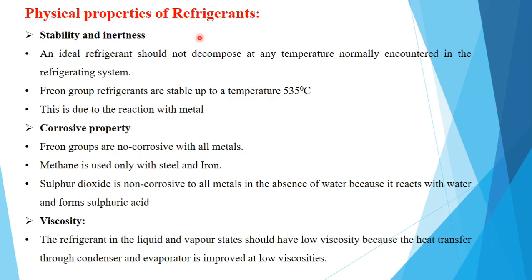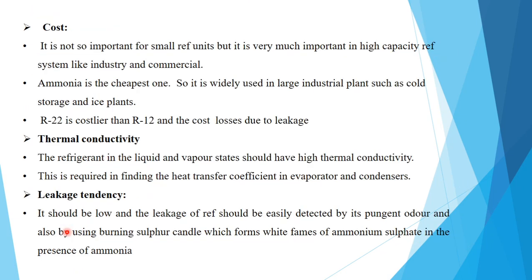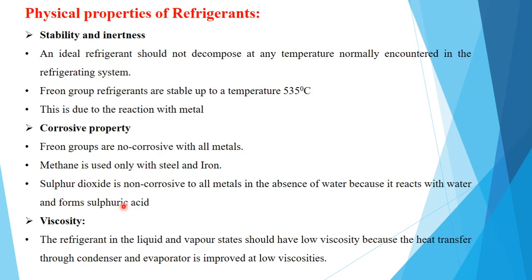Physical properties of refrigerants include stability and inertness, corrosive property, viscosity, cost, thermal conductivity, and leakage tendency. First is stability and inertness. An ideal refrigerant should not decompose at any temperature normally encountered in a refrigerating system. Freon group refrigerants are stable up to a temperature of 535 degrees Celsius.